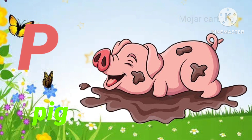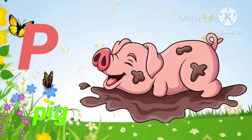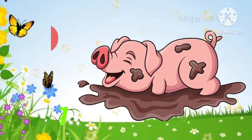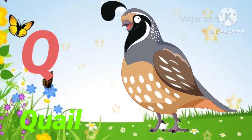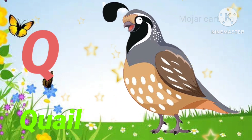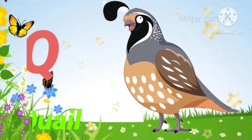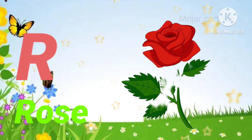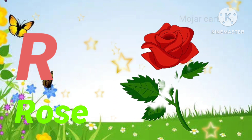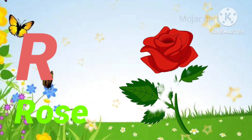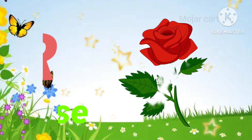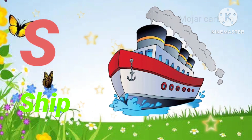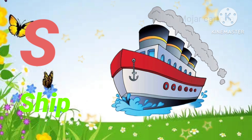P. P is for pig. Q. Q is for quail. R. R is for rose. S. S is for sheep.